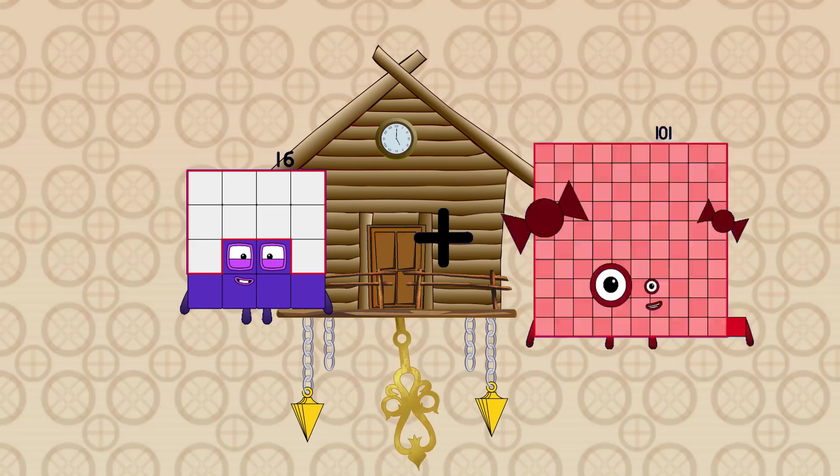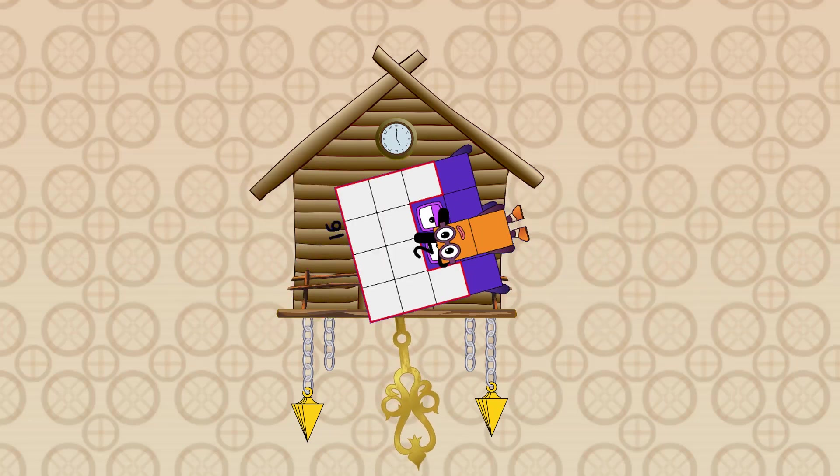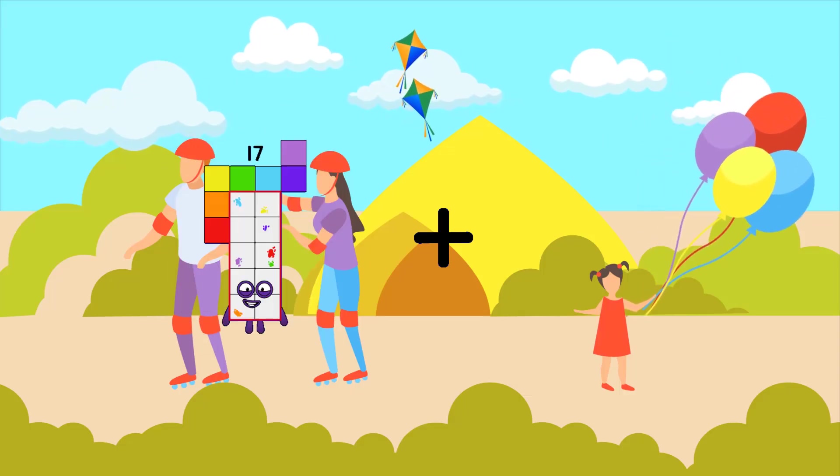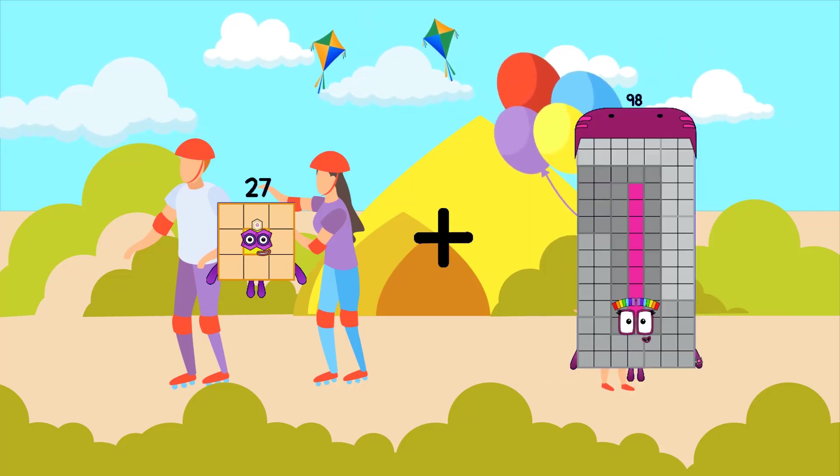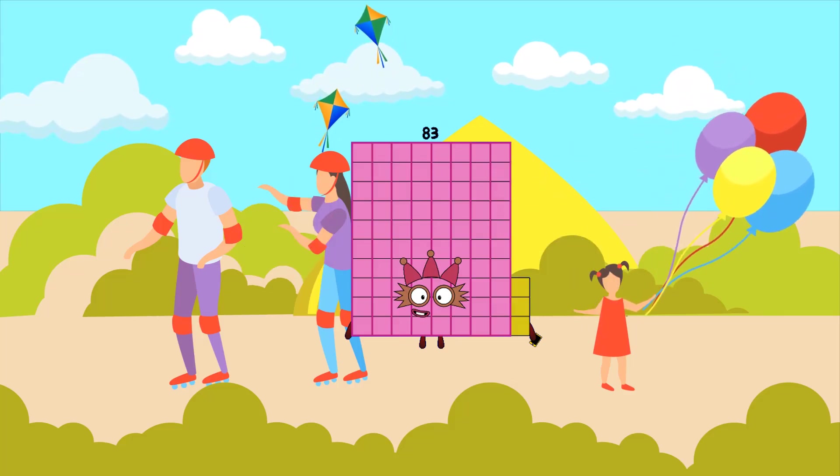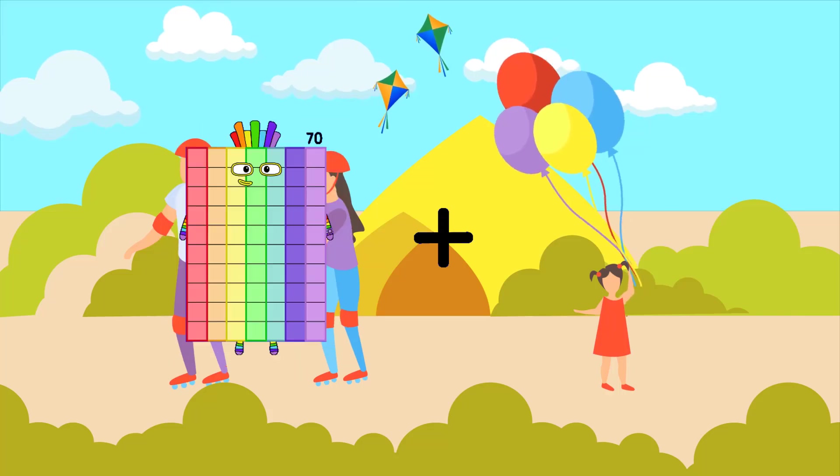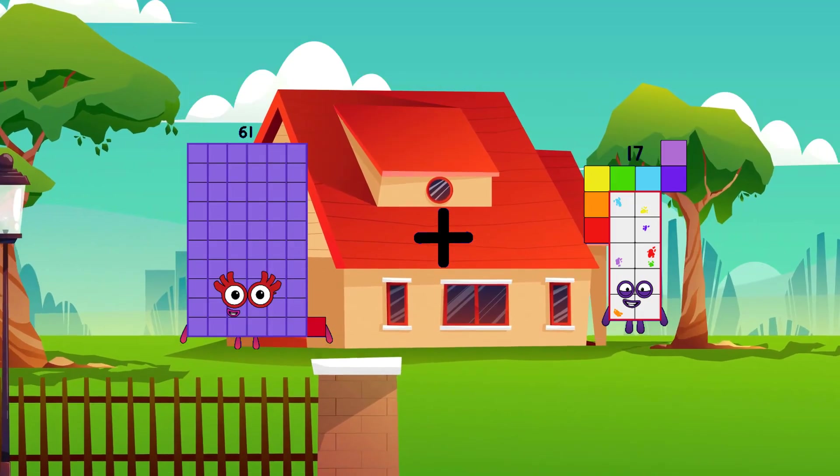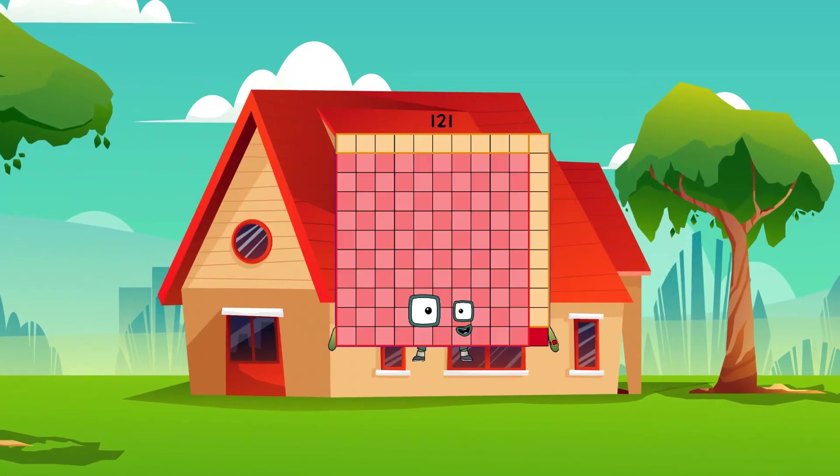16 plus 2 equals 18. 27 plus 56 equals 83. 61 plus 60 equals 121.